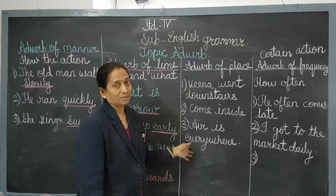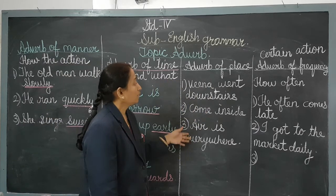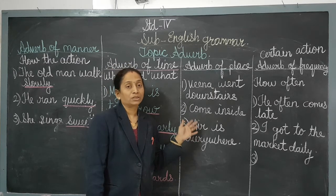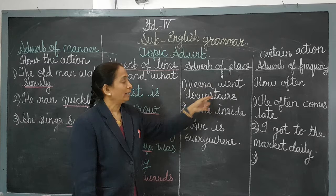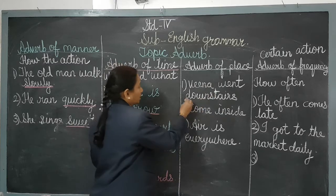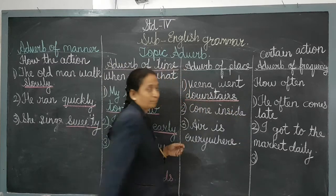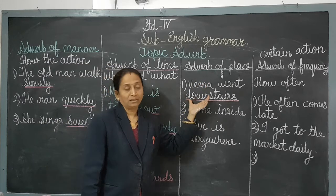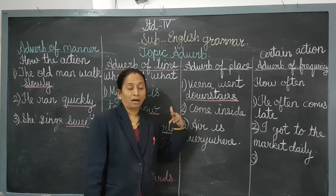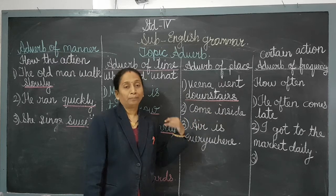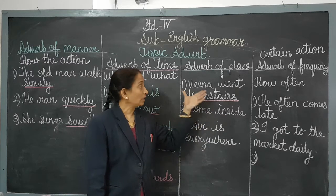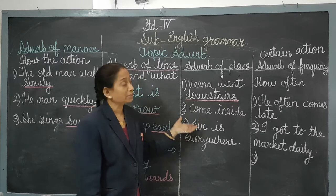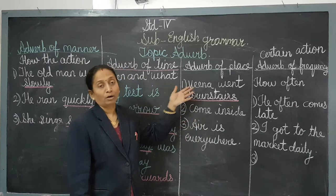Next is the adverb of place. The adverb of place tells us where the action is going to be taken. For example: 'Neena went downstairs.' Where did she go? Downstairs. With the word 'downstairs' we can understand the place. Words like downstairs, upstairs, outside, inside, and behind all show us the place — that is the adverb of place.